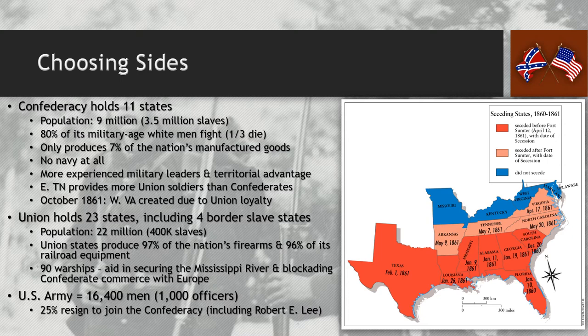Most of the men who defect do so out of a sense of fealty to the South — they believe they would be dishonoring themselves or their families if they chose to remain with the Union. There is a very prickly sense of honor associated with the South, whether tied to masculinity or family honor. One hundred thousand men who live in the South end up fighting against the Confederacy, so just because the division appears to be along North-South lines doesn't mean everyone fights for their own side.